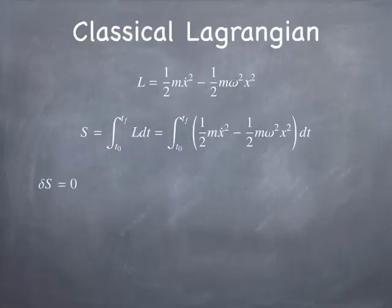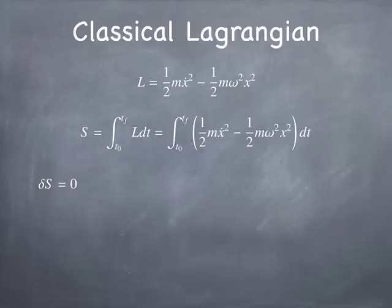Delta S equals zero means small variations of the trajectory do not affect S. It's kind of like finding the minimum of a function — you look for the place where the slope is zero, where changing x by a little bit doesn't affect y very much. Technically this isn't looking for a minimum, it's looking for an extremum, but in the case I'm giving you, it's actually a minimum.